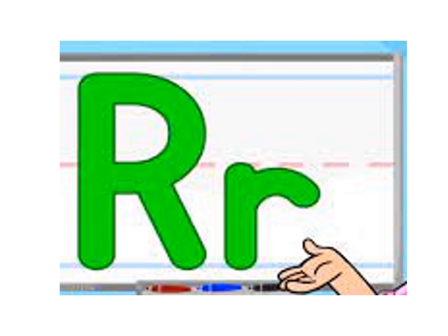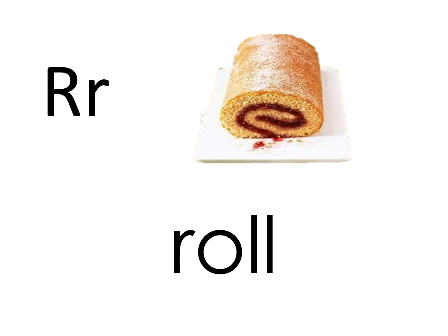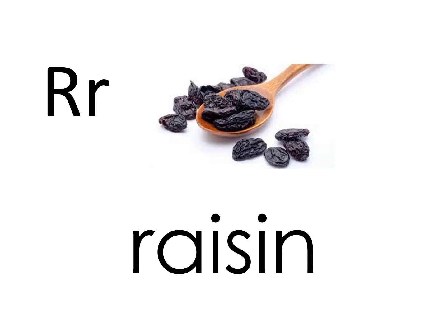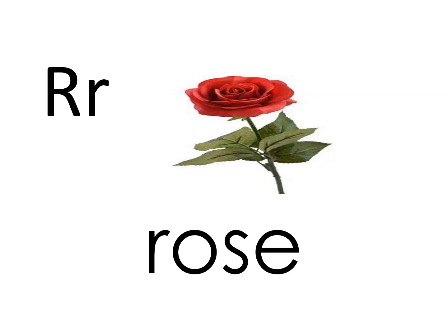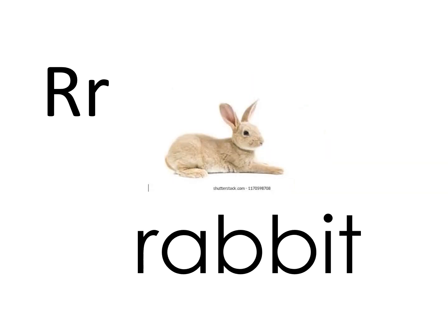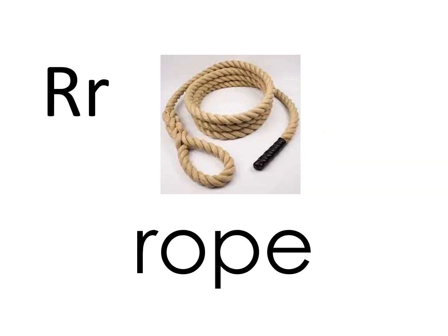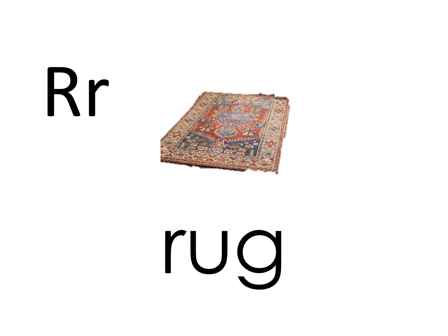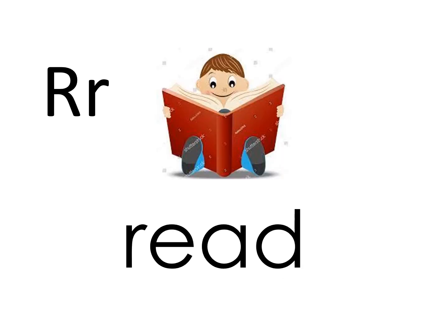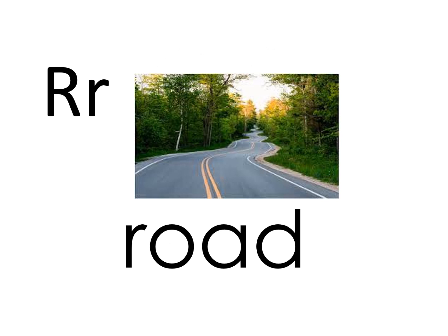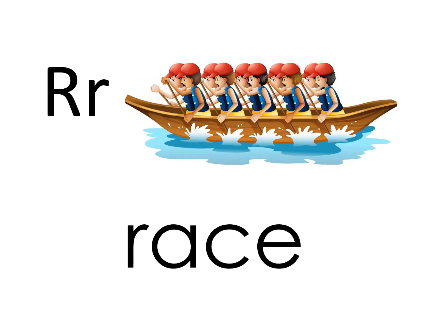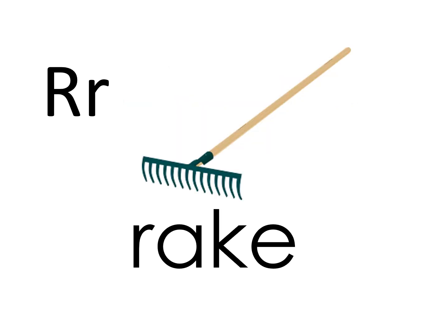Now we are going to review the vocabulary words of some words that begin with the letter R. Raisin, Rose, Rabbit, Rope, Rug, Read, Rode, Rake.